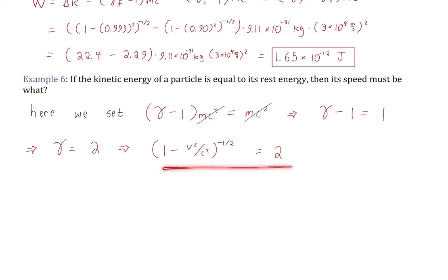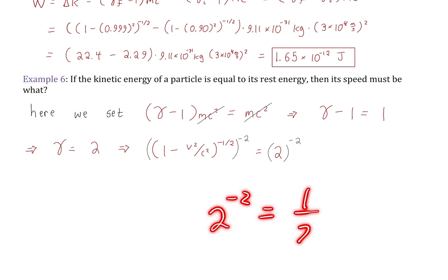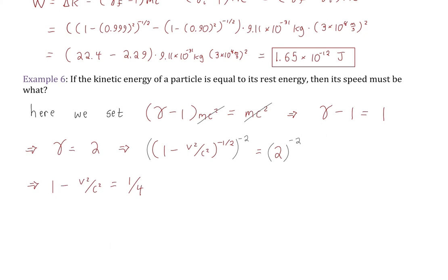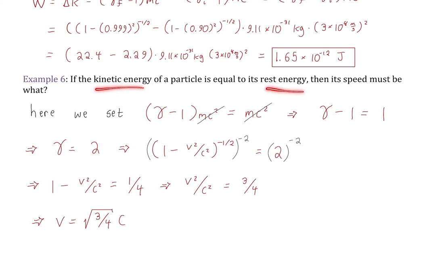With gamma equals 2, we reintroduce the dependence on the speed of light by writing gamma as 1 minus V squared over C squared to the negative one-half power. Raising both sides to the negative 2 power eliminates the square root on the left, and 2 to the negative 2 power gives 1 over 4 on the right. So 1 minus V squared over C squared equals 1 over 4. Subtracting gives V squared over C squared equals 3 over 4, so V equals the square root of 3 over 4 times C — about 87% the speed of light, or about 260 million meters per second.